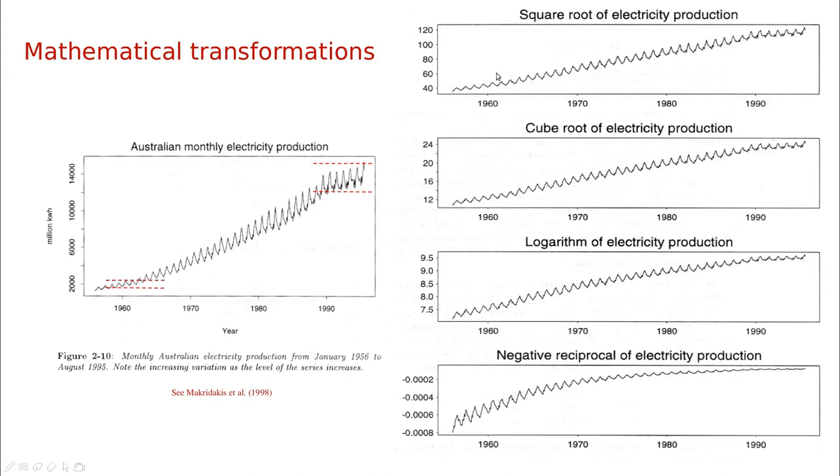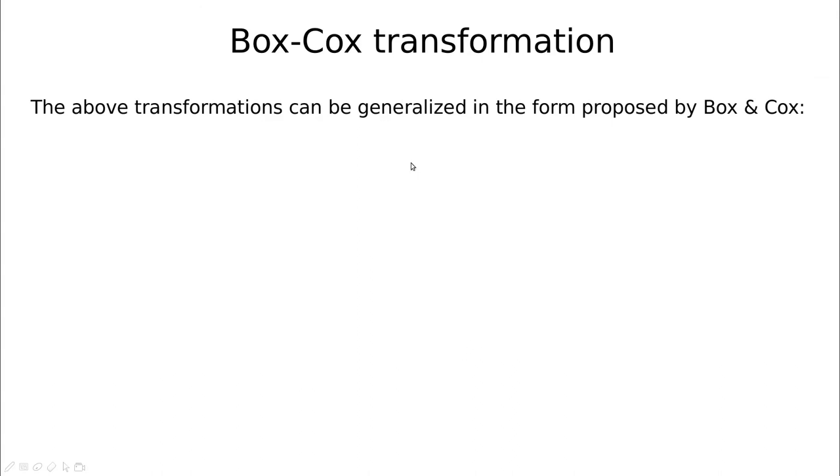So essentially the transformation wants to produce residuals that are almost the same at the beginning and at the end. So let's try some of them. You can see here that the square root is performing really well, so more or less the variance here and here are almost the same. The cube root is almost the same, the logarithm is not that good because you have some shrinking of the series here, and the negative reciprocal is absolutely rubbish because you can see that this is almost flat, and the variance here is really large.